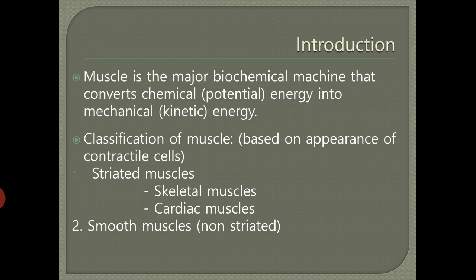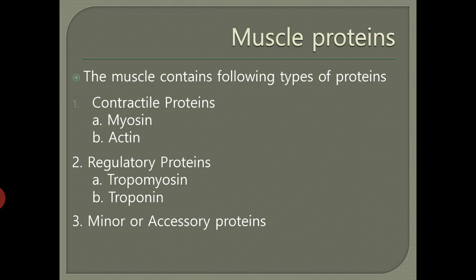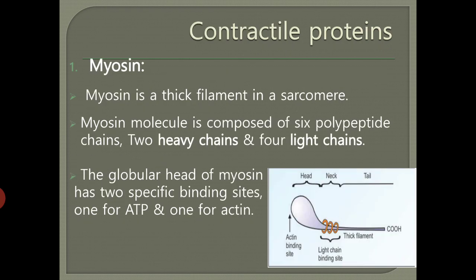Coming to the muscle proteins, we have different types: contractile proteins which help in contraction, regulatory proteins which regulate contraction, and minor or accessory proteins. Under contractile proteins we have myosin and actin. The regulatory proteins are tropomyosin and troponin.